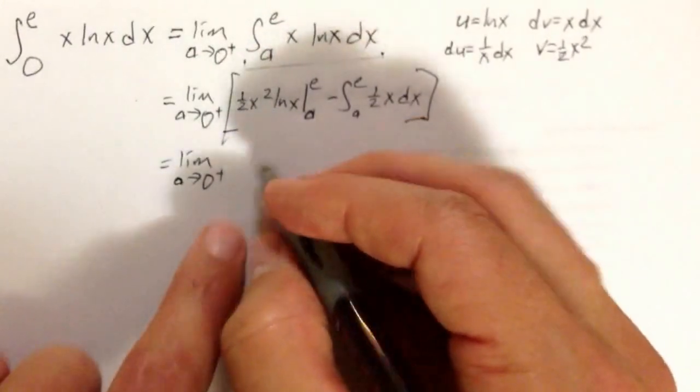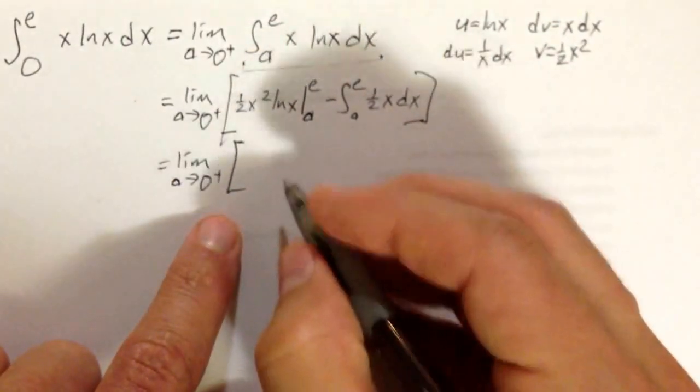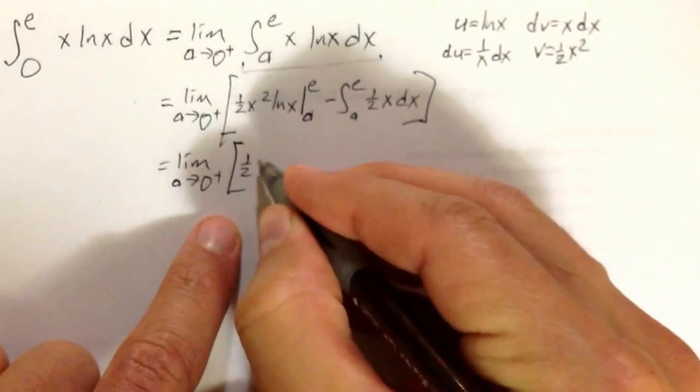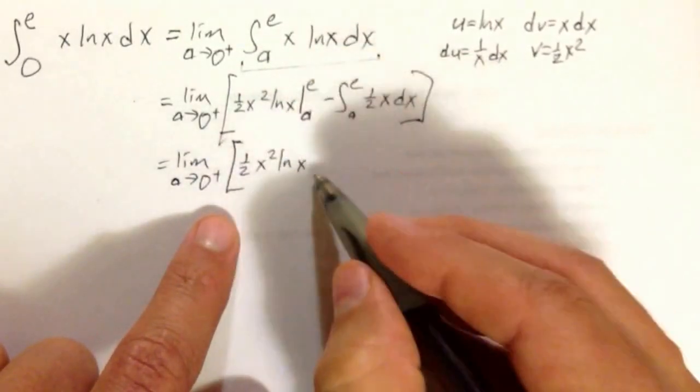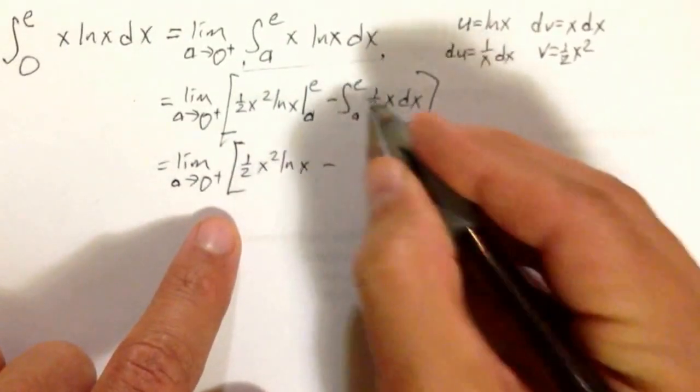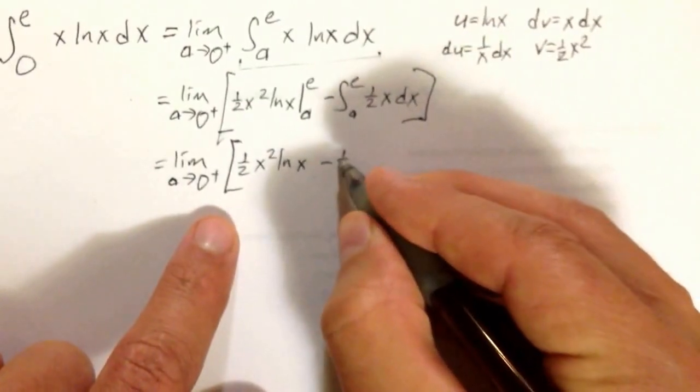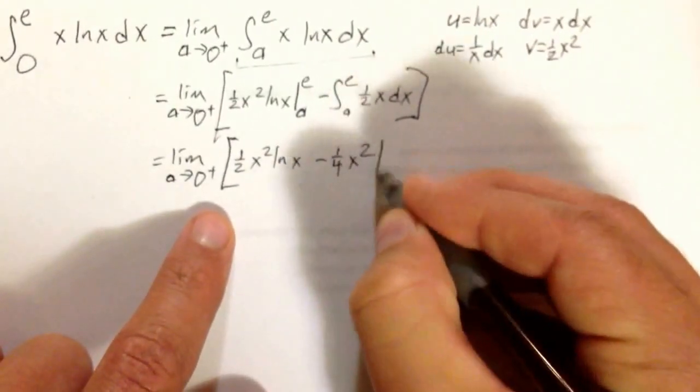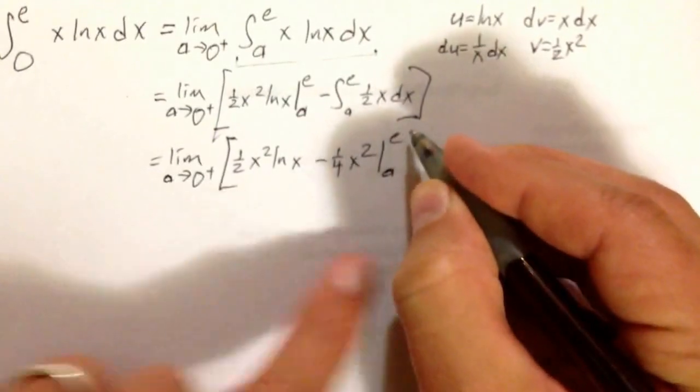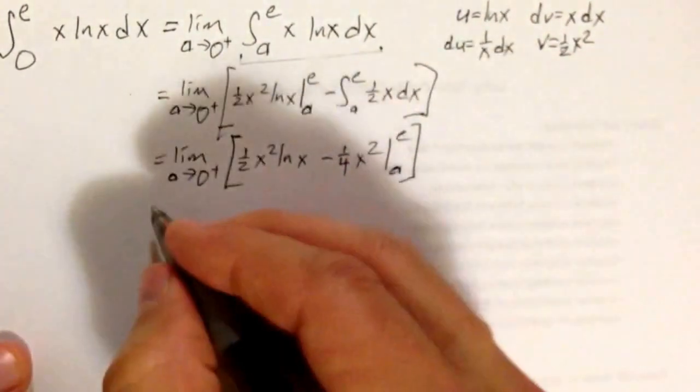So what do I have here? I have one-half x squared natural log of x evaluated from a to e, but then here I have one-fourth x squared evaluated from a to e. So I'll just put the evaluation from a to e on the outside for the entire piece.